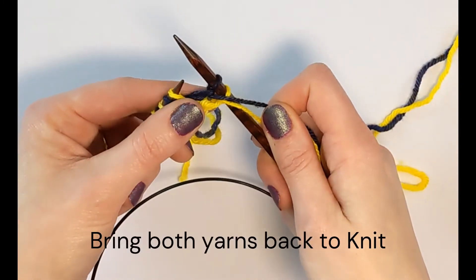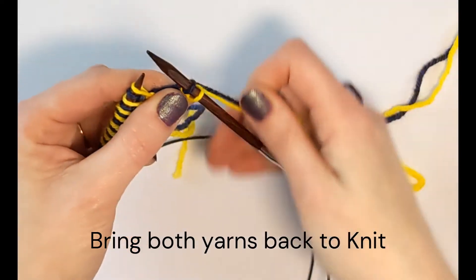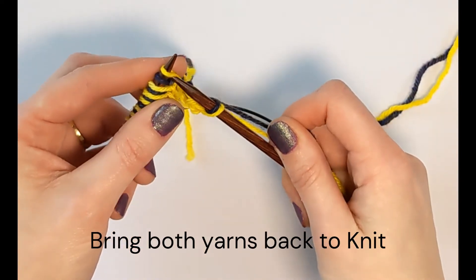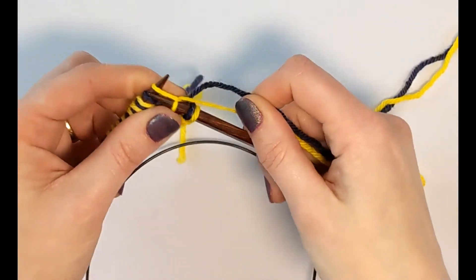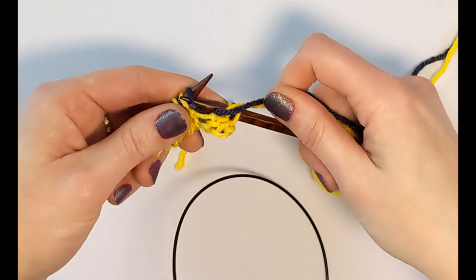So again, I'll bring both yarns to the back. I'll knit with yellow, I'll bring both yarns forward, and purl with blue.